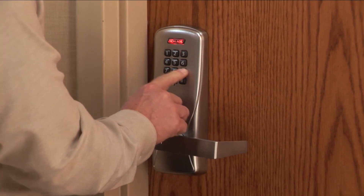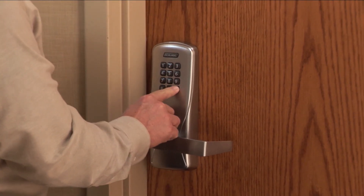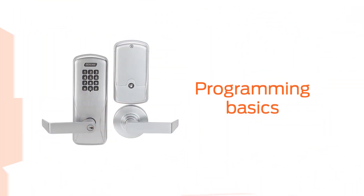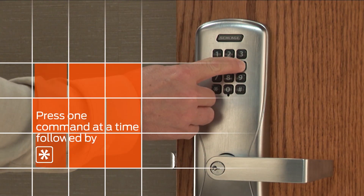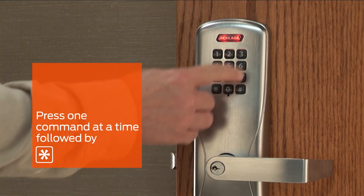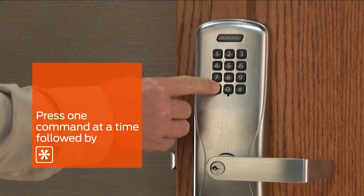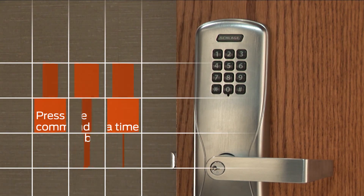On the CO100 lock, PIN codes are used to provide access control. The programming process consists of entering one command at a time, followed by pressing the star key.